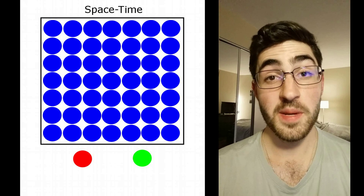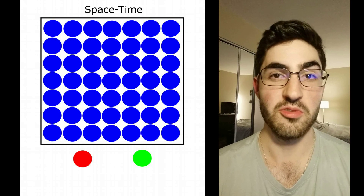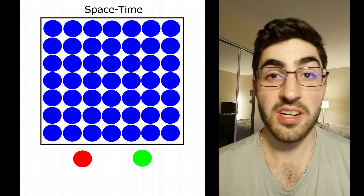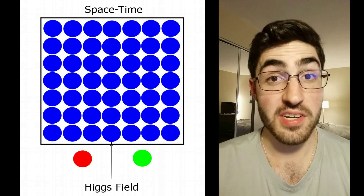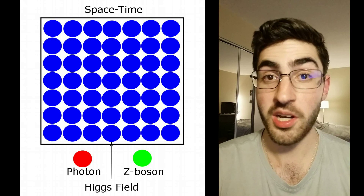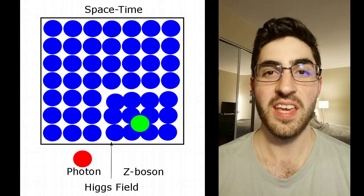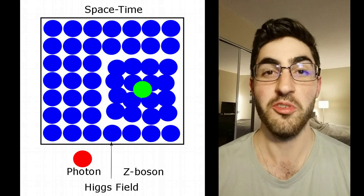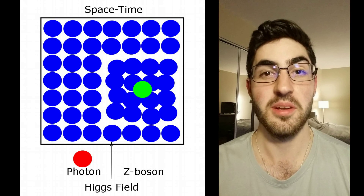So let's say we take all of space-time and we fill it with a field. In this diagram the field is represented by the blue circles. Just like you get electric and magnetic fields, now we have the Higgs field. Now let's also imagine that we have two fundamental particles: a photon and a Z boson. When the Z boson tries to move through the Higgs field, it interacts with it, and the Higgs field acts like a syrup and slows down its movement. This interaction with the Higgs field gives the Z boson a mass.